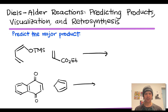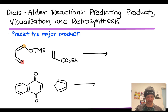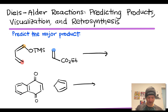One of the first things we want to notice is that there are two distinct terminal positions, or termini, in the diene and dienophile. The diene has a CH2 carbon here, and a carbon connected to an OTMS group, where TMS is the trimethylsilyl group. The dienophile also has two distinct termini of the alkene: one that is just a CH2, and one connected to an ester substituent.